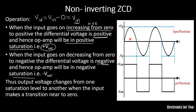Since it is a non-inverting ZCD, the input waveform will not be inverted at the output. Therefore, for a positive input value you will get a positive output, and for a negative input you will get a negative output.